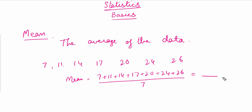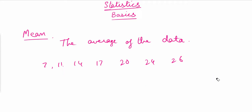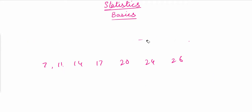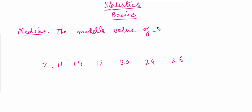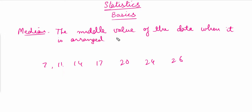The next thing to discuss is the median. Median is basically the middle number of the data when it is arranged in ascending order — from lowest to biggest. From our data we can see it has been arranged in ascending order from smallest to largest, so the middle number will give us the median.